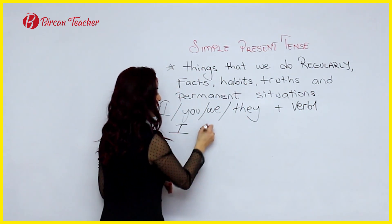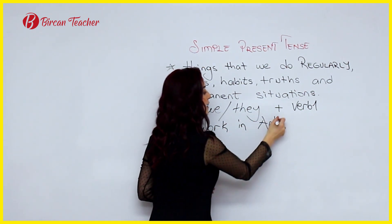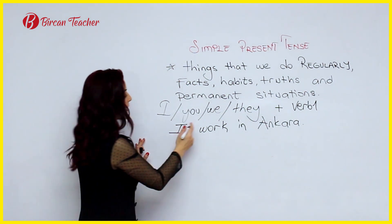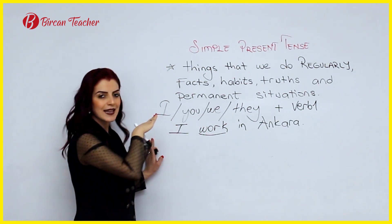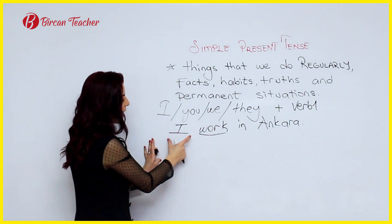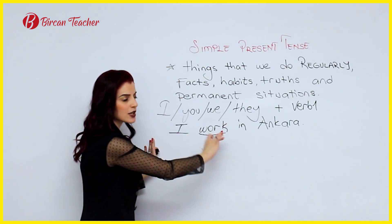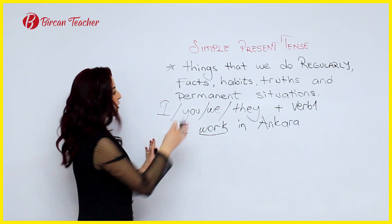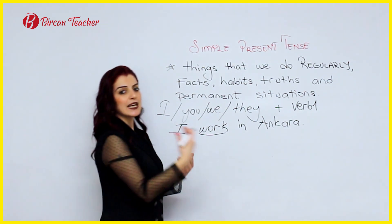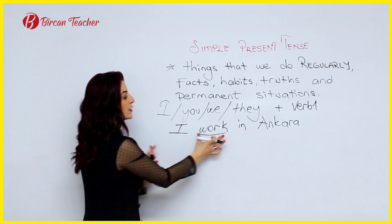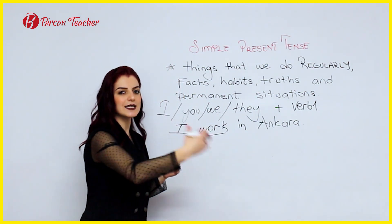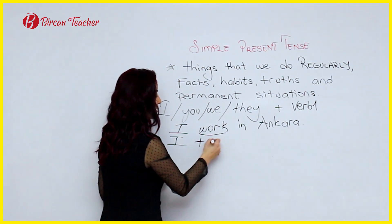For example: 'I work in Ankara.' To make a sentence in simple present tense, after the subject 'I' you use the bare infinitive — no suffix or prefix, no -ing, no 'to,' no -s. Just 'I work.' Similarly: 'You work,' 'They work,' 'You study English,' 'I teach English.' This is a permanent, regular action — I am an English teacher, so I do it all the time.